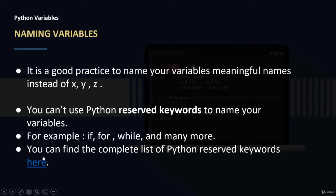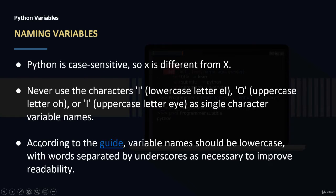You can find a complete list of Python reserved keywords that you cannot use when naming variables. Another important point is that Python is case sensitive — a variable called x lowercase is different from X uppercase. We should also avoid using the characters 'l' (lowercase), 'O' (uppercase), or 'I' (uppercase) as single-character variable names, because they can be confused with numbers like 1 and 0.